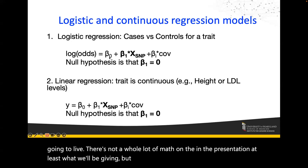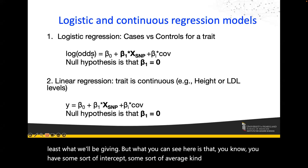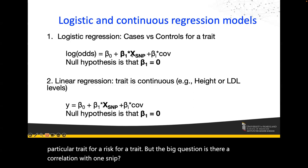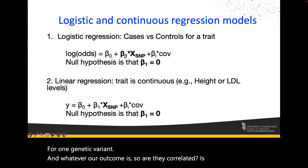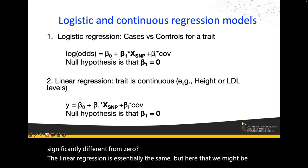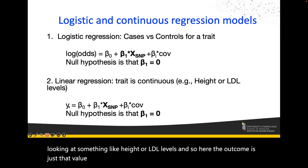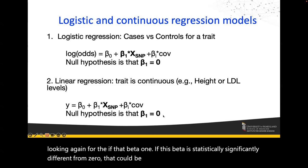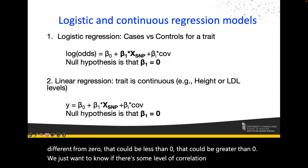In these models, you have some sort of intercept — some average log odds of risk for a particular trait. The big question is whether there's a correlation between one SNP, or one genetic variant, and our outcome. Is beta one significantly different from zero? For linear regression, it's essentially the same, but here the outcome might be something like height or LDL levels. We're again looking for whether beta is statistically significantly different from zero — either less than or greater than zero — indicating some level of correlation between the genetic variant and our trait of interest.